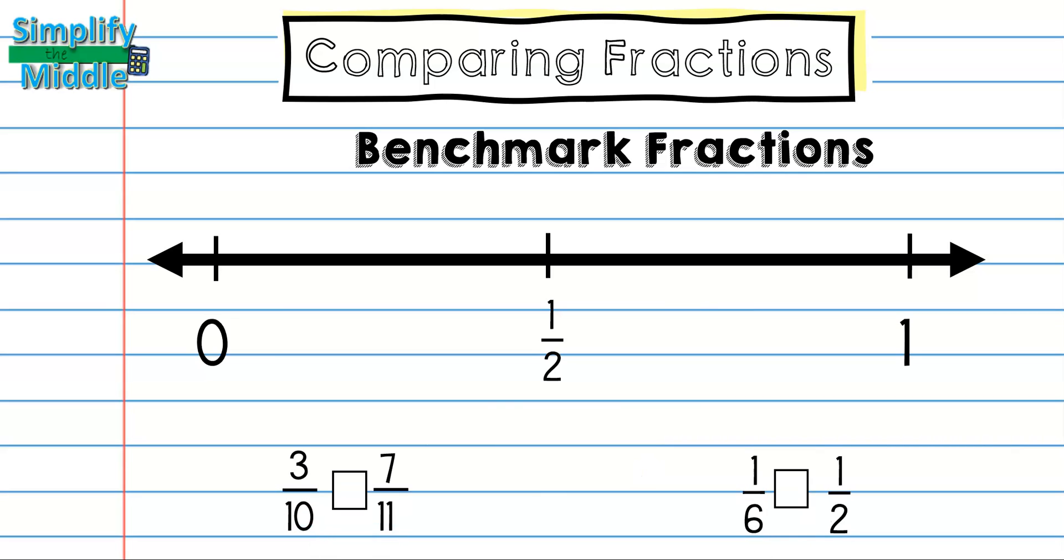Pause the video to see if you can try these. You should have found that half of 10 is 5, and since 3 is smaller than 5, 3 tenths is smaller than 1 half. Half of 11 is 5 and a half, and since 7 is bigger than that, 7 elevenths is larger than 1 half. So that means that 3 tenths is smaller than 7 elevenths, because 3 tenths is smaller than 1 half, and 7 elevenths is larger than 1 half.